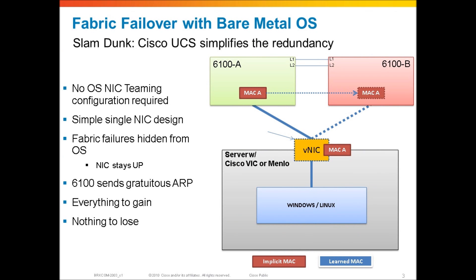Let's take a quick look at how to use Fabric Failover and what are some of the use cases that customers are using. One of the primary use cases at the very onset was to use Fabric Failover for bare metal OSes on a physical blade — Windows or Linux loaded right on the bare metal — where you were not using any kind of virtualization or VMware or Hyper-V. Typically, to provide high availability for that OS, you would have multiple adapters with multiple cables going to multiple switches.